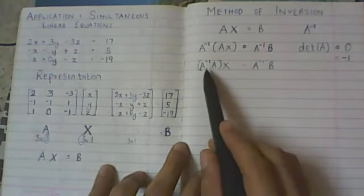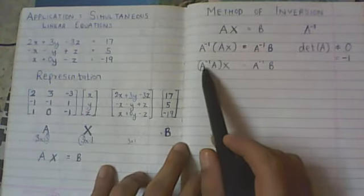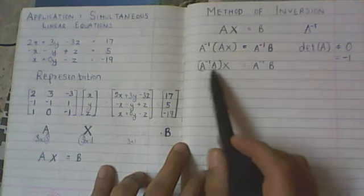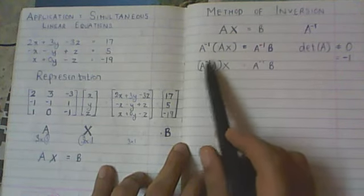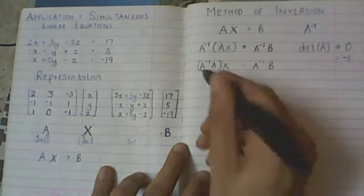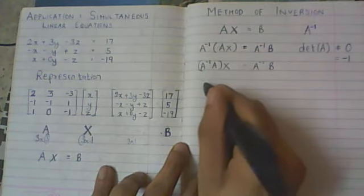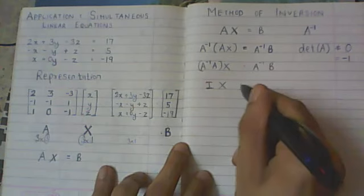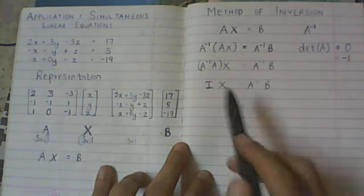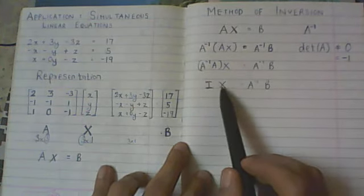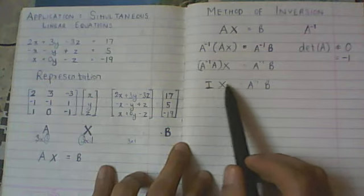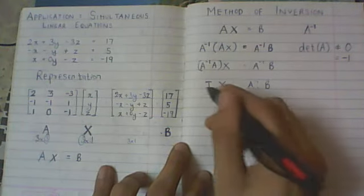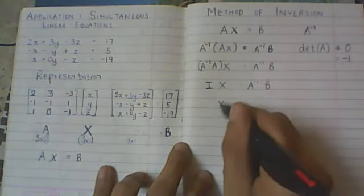We know that the major property of inverse is that if you multiply it from either of the sides to your original matrix, you get the identity matrix back. So this simplifies to just the identity matrix. And also we know that identity matrix when you multiply it with any matrix, you just get that same matrix back. So this will give you just the X back.